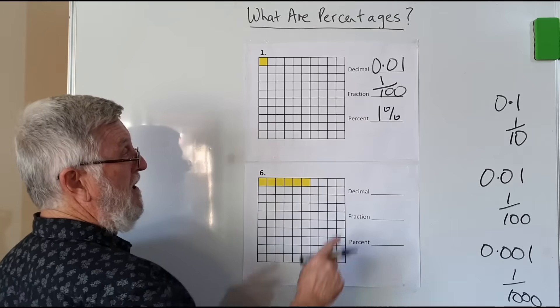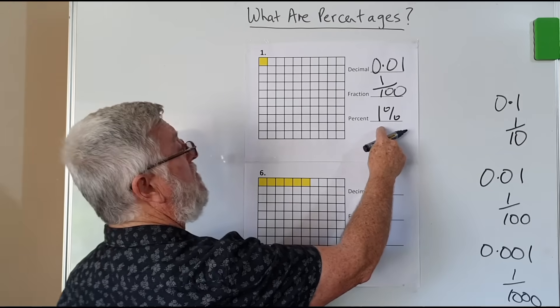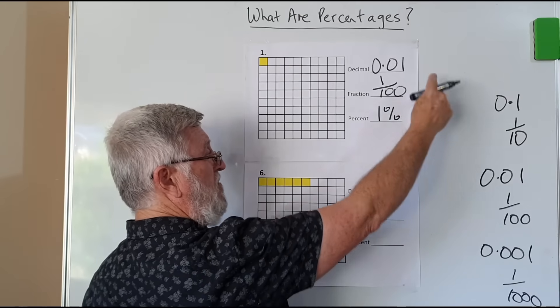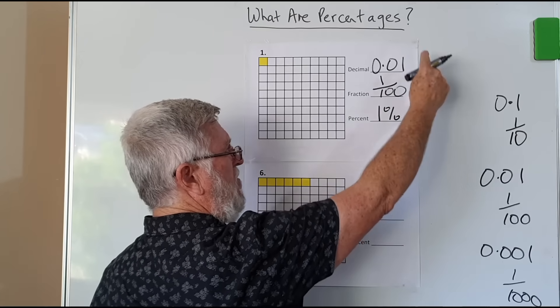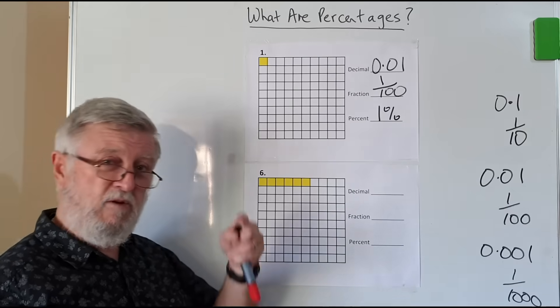So this is that one percent that we can use in questions later on. Three possible ways of writing one percent: you can write one percent, you can write one over a hundred, and you can write 0.01. I want to use that in the questions that are coming up in the next couple of videos.